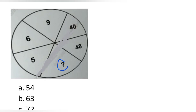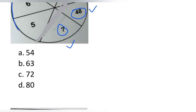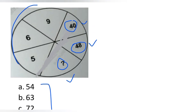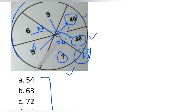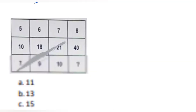Next question: we have 9, 6, 5, question mark, 40, and 48. The bigger terms suggest the answer will also be larger, consistent with the options. You can see 6×8 = 48 and 5×8 = 40 — we are simply multiplying by 8. So 9×8 = 72. Check whether 72 is in the options; if yes, the answer is 72. If not, a different technique is needed.